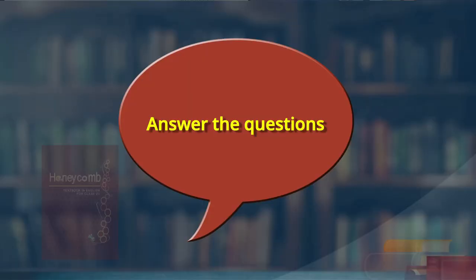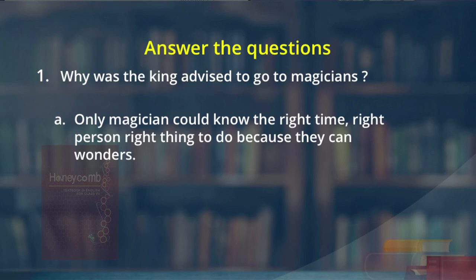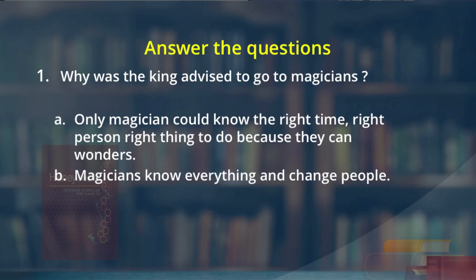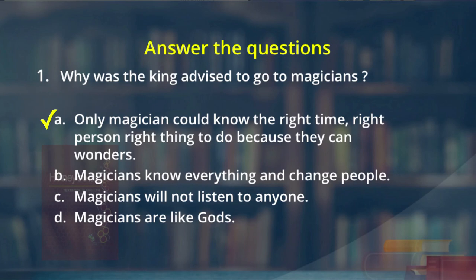Now we have some multiple choice questions that make you think about the possibilities before answering. First question: why was the king advised to go to the magicians? The options are: only magicians could know the right time, the right person, and the right thing to do because they can do wonders; magicians know everything and change people; magicians will not listen to anyone; magicians are like gods. The correct answer is option A — only magicians could know the right time, right person, and right thing to do because they can do wonders.